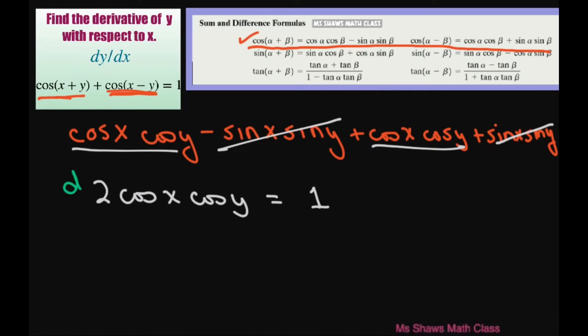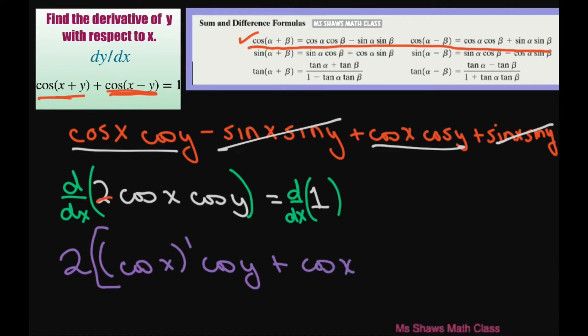Now let's differentiate both sides with respect to x. Alright, so for the left hand side we're going to go ahead and pull out this 2 and write this as 2. And then we're going to take our cosine of x and differentiate that times cosine of y plus cosine of x times, and we're going to differentiate cosine of y.